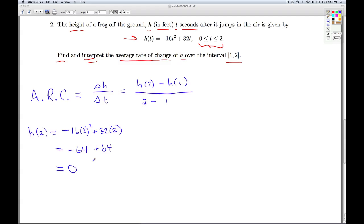Now, even though we're not asked to interpret what this means, what does h of 2 equal 0 mean? Well, h represents the height off the ground, and we all know that what goes up must come down. So h of 2 means the frog is 0 feet off the ground. In other words, at this point he's returned to the earth.